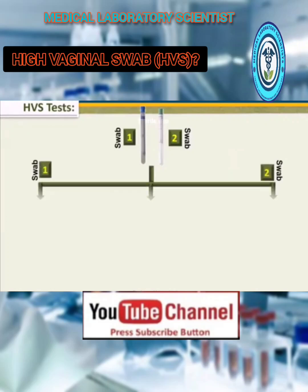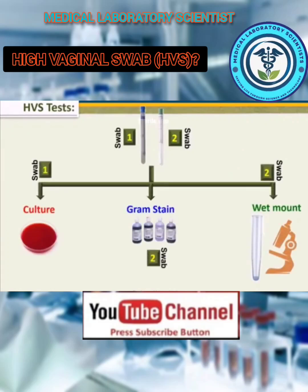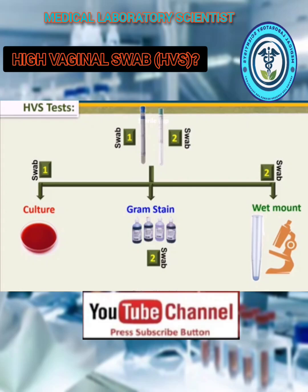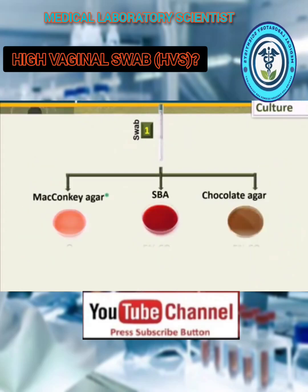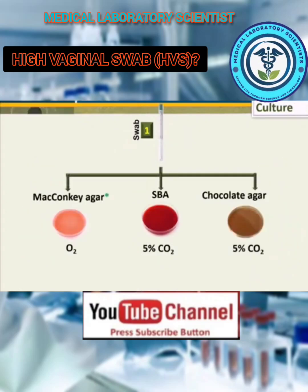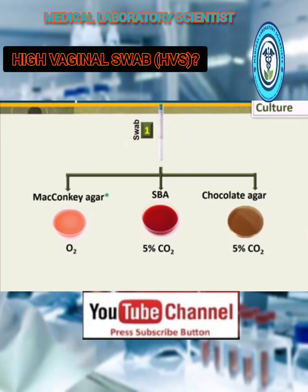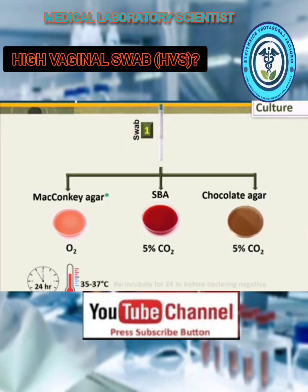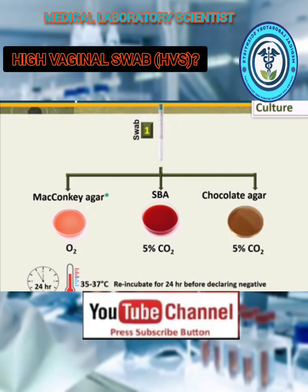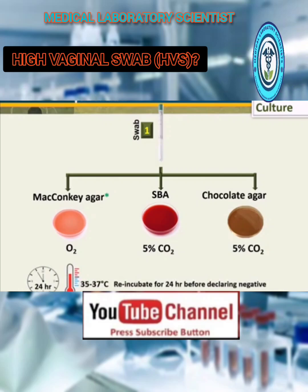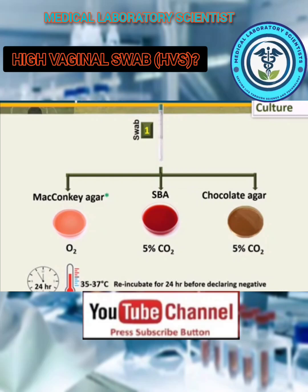HVS tests include culture, gram stain, and wet mount. For culture, use swab one to culture on Wakonka agar, blood agar, and chocolate agar. Incubate at 35 to 37 degrees Celsius for 24 hours. Re-incubate for an additional 24 hours before declaring a negative result.